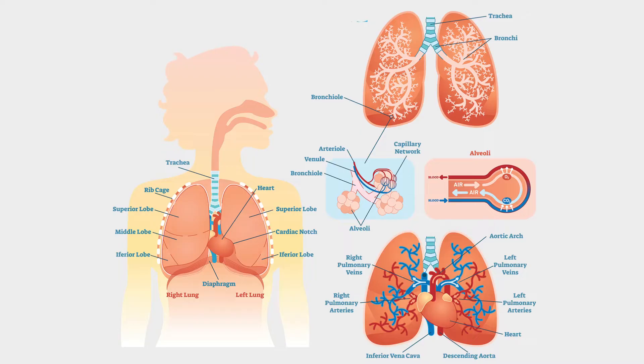Over on the left-hand side at the top, we see the trachea moving down into the bronchi, finally into the bronchioles, and then all the way down to the alveoli.